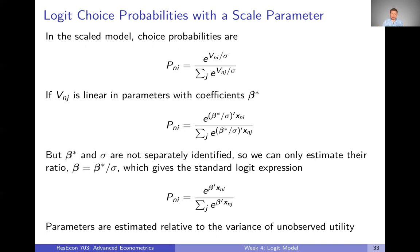Ultimately, we estimate these beta parameters, and those estimates are always relative to the variance of the unobserved utility. If we had two samples that were otherwise identical but one had more variance in the random unobserved utility term, we'd get different beta parameters. So it can be tricky to compare one model to the next — the model is internally consistent, but if the variance of the error term differs between models, we can't directly compare parameters because they're only estimated up to that scaling factor.